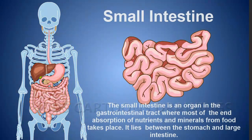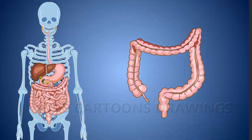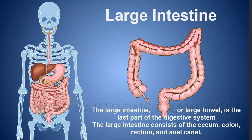Small Intestine: The small intestine is an organ in the gastrointestinal tract where most of the end absorption of nutrients and minerals from food takes place. It lies between the stomach and large intestine.